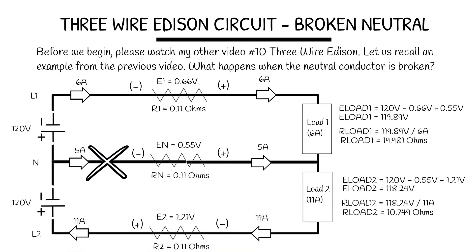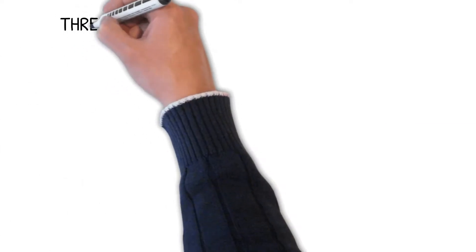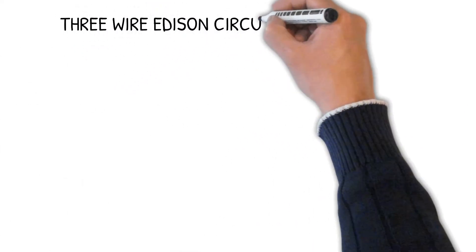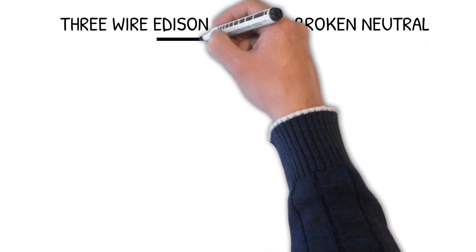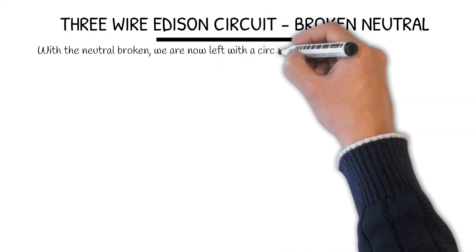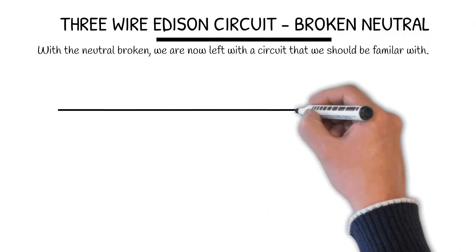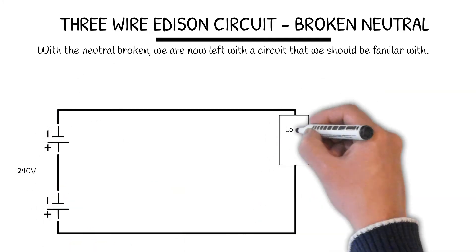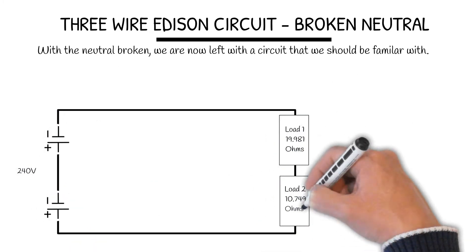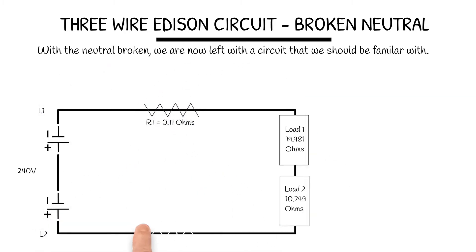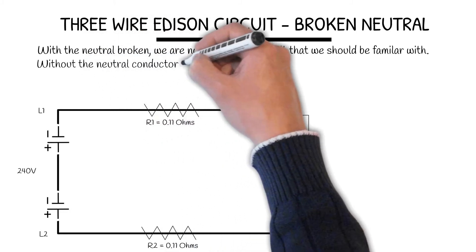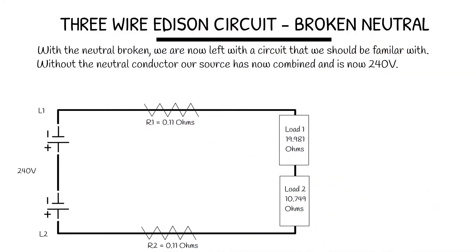With the neutral broken, I mark with an X on this conductor. 3 Wire Edison Circuit Broken Neutral. With the neutral broken, we are now left with a circuit that we should be familiar with. Without the neutral conductor, our source has now combined and is now 240 volts.